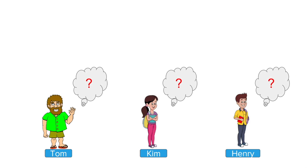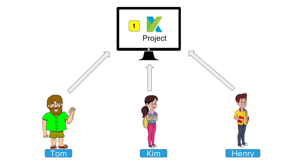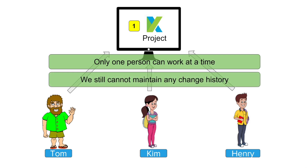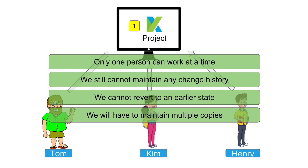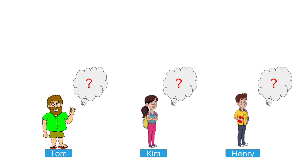There is another solution: they can use a common machine. They will put a single copy of their project on a common machine — it can be a remote or on-premises machine — and every team member will log into this machine to work on the project. However, this approach has its own challenges: only one person can work at a time, we are still not able to maintain any change history, we cannot revert to any earlier state, and we have to maintain multiple copies per change. So again, this approach is manual, inefficient, and time consuming.